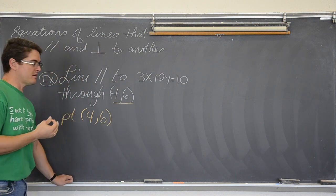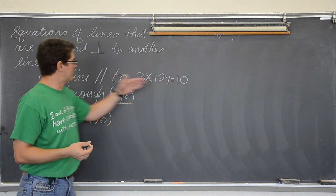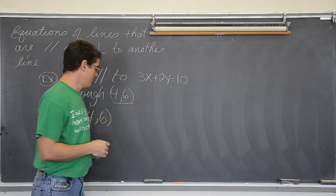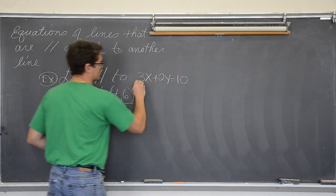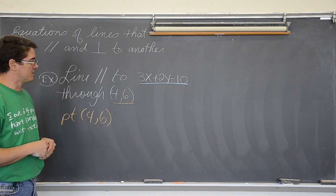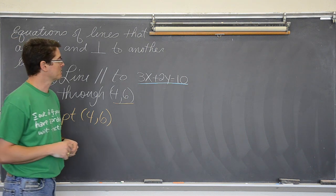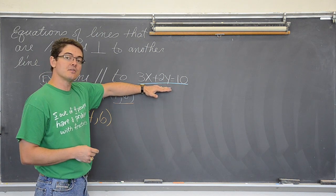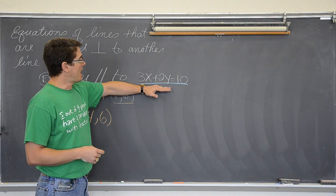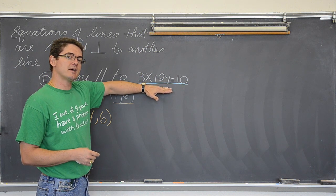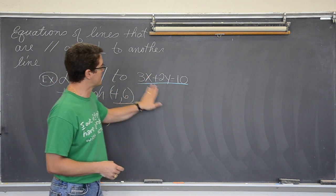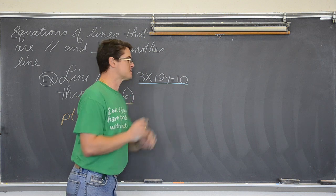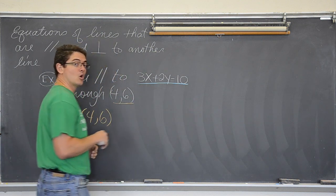Point slope form tells you what you need to write the equation of a line. You need a point which we have right here and a slope. Well, unlike the other day I am not just giving you the slope. So why do I need to use this equation of this line to come up with the slope? That is why the equation of this line is given to us. So that we can find the slope we need to fill in the rest of this information. Well, this is in almost general form. Some books may call it the standard form. I cannot look at this and tell what the slope is because the y is not by itself. So I need to work this out.